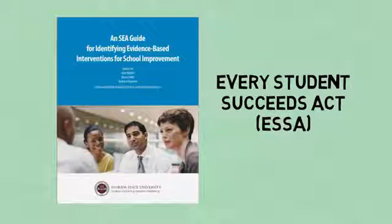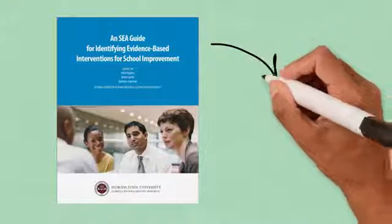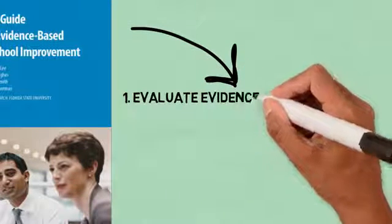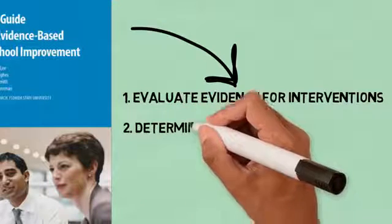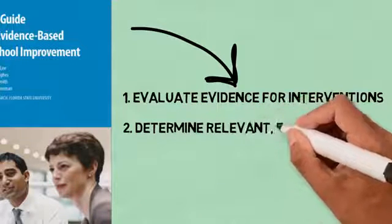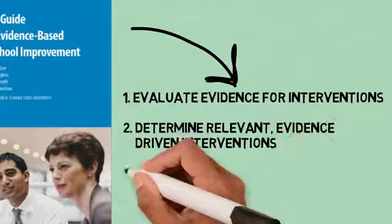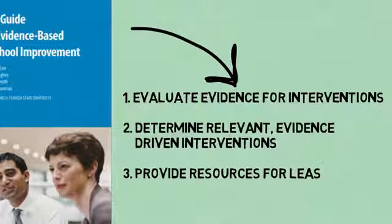The purposes of this guide are to help SEAs. First, evaluate the evidence base for interventions as they identify those to be included in the State Plan for ESSA as options for schools in need of comprehensive or targeted support. Second, determine the interventions that have strong evidence and are relevant and appropriate to meeting the needs of the Local Education Agencies, or LEAs. And third, plan to provide resources for LEAs to help them choose the best evidence-based options for schools in need of comprehensive or targeted support to include in school improvement plans.